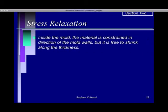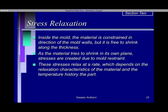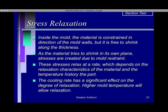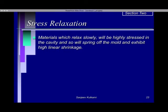Stress relaxation: inside the mold the material is constrained in the direction of the mold walls but is free to shrink along the thickness. As the material tries to shrink in its own plane, stresses are created due to mold constraint — the mold is made of steel and is very strong compared to plastic, so it imposes a restraint on the polymer's ability to shrink in that direction. These stresses relax at a rate which depends on the relaxation characteristics of the material and the temperature history of the part. The cooling rate has a significant effect on the degree of relaxation; higher mold temperatures will allow more relaxation. Materials which relax slowly will be highly stressed inside the cavity and will spring off the mold upon ejection, exhibiting higher linear shrinkage.